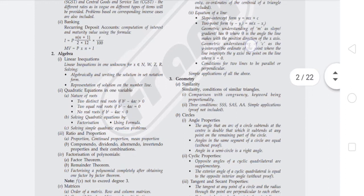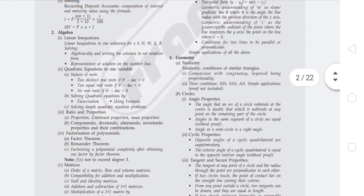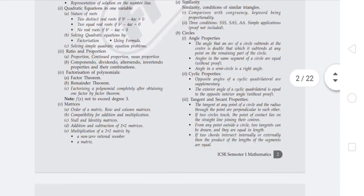In Algebra, Linear Inequations in one unknown: for x belongs to natural numbers, W for whole numbers, Z for integers, and R for real numbers. Solving algebraically and writing the solution in set notation form, then representation of solution on the number line.